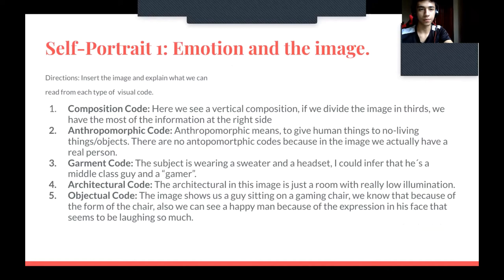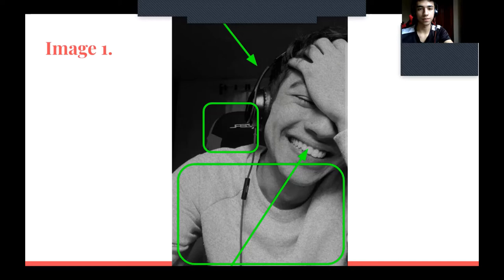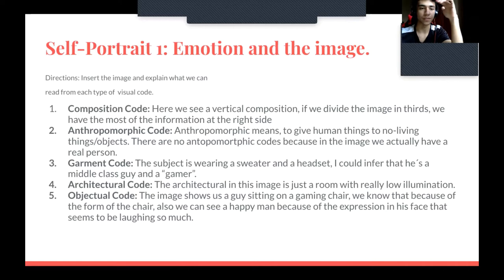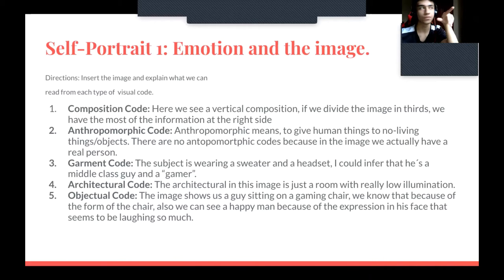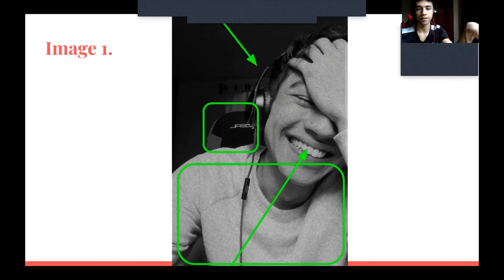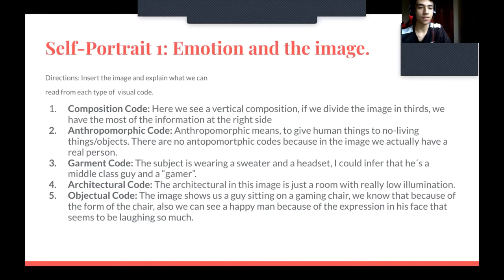This is image number one. At the composition code, we see a vertical composition. If we divide the image in thirds, we have most of the information on the right side. The second code is anthropomorphic, which means to give human qualities to non-living things or objects.